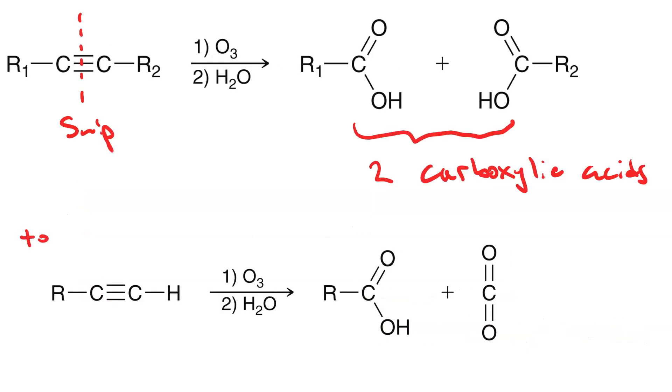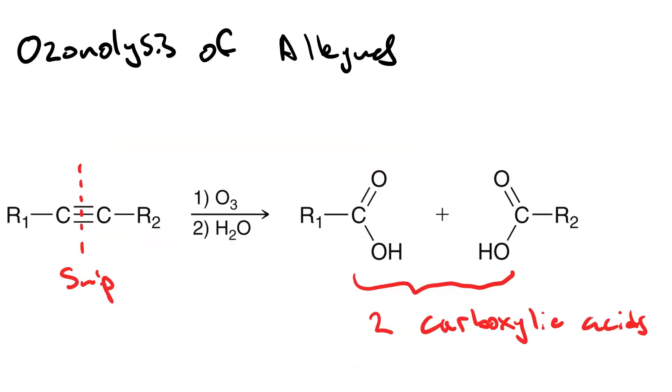If our substrate is a terminal alkyne, the substituted side produces a carboxylic acid, and the unsubstituted side produces carbon dioxide. I should mention that synthetic chemists have told me this is unreliable, and a much better pathway is to first reduce your alkyne and then do ozonolysis with peroxide.